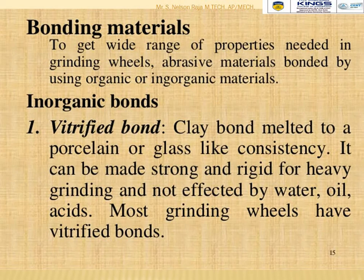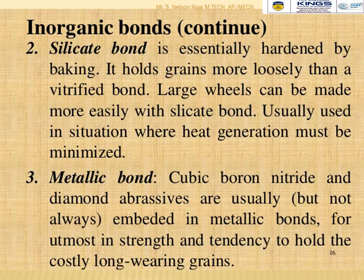Bonding materials hold abrasive particles together to give grinding wheels a wide range of properties, using organic or inorganic materials. Inorganic types include: vitrified bond — a clay bond melted to a porcelain or glass-like consistency, strong and rigid for heavy grinding, not affected by water, oil or acid; and silicate bond — hardened by baking, holds grains more loosely than vitrified bond, and is used in situations where heat generation must be minimized.